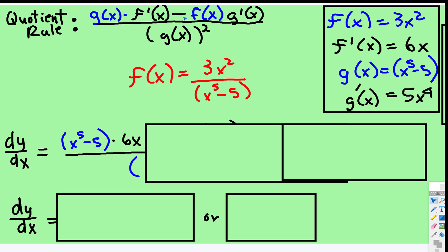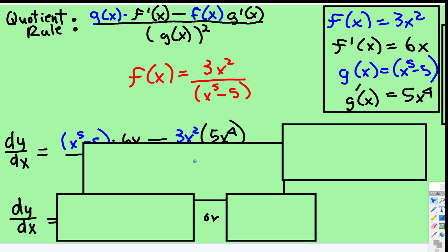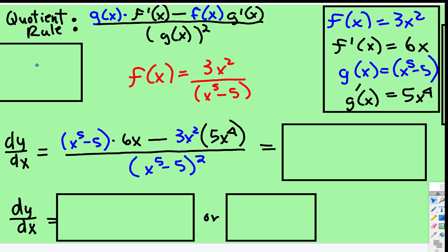And then we're going to subtract the original f, so 3x squared. Multiply that by the derivative of g, which is 5x to the fourth. And all of that will be over the original g squared.